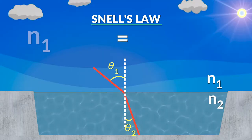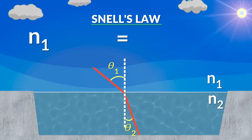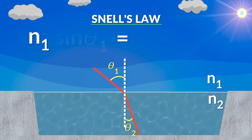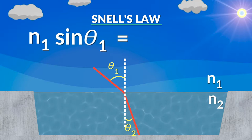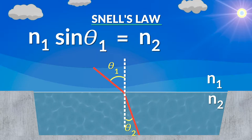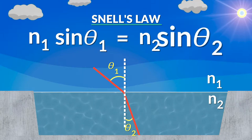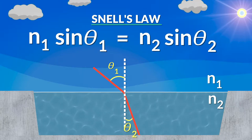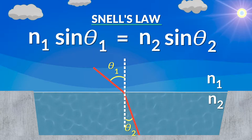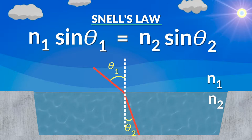Let's take a look at it. N₁, the index of refraction in the first medium, multiplied by sine θ₁ — θ₁ being the angle of incidence — equals N₂, the index of refraction in the second medium, times sine θ₂ — θ₂ being the angle of refraction in the second medium. When you do this calculation, you can look up the N values, the indices of refraction, from charts. And when you measure one angle, you can figure out the other angle.